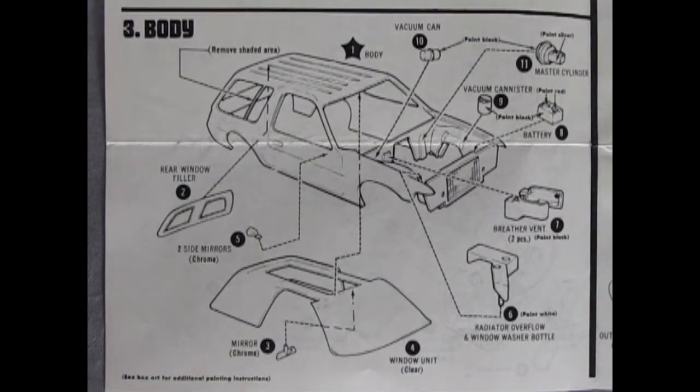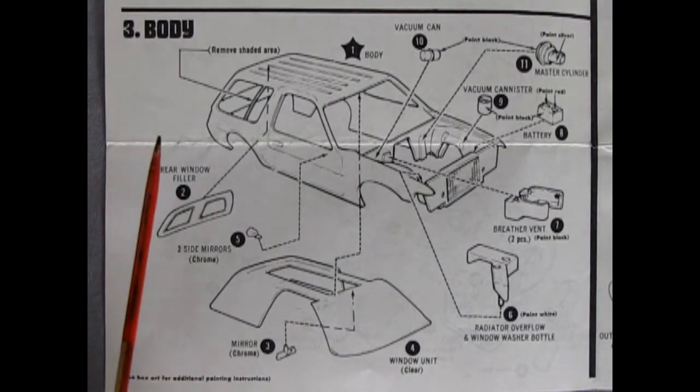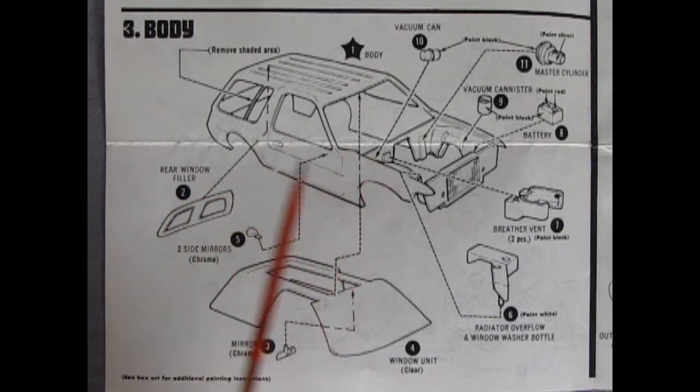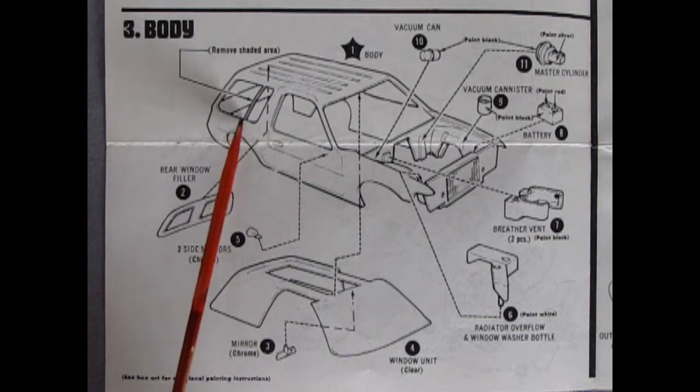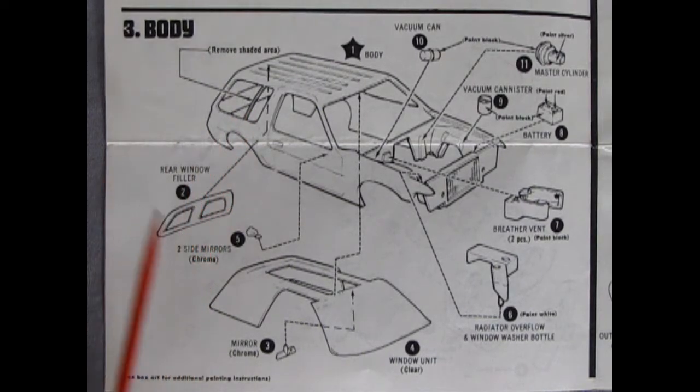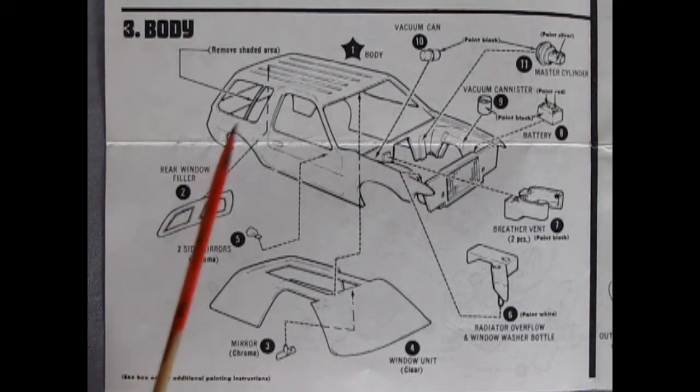Panel 3 shows our body assembly and there are quite a few things you need to do to alter the stock pacer to accept the custom pieces. One of them is to remove the brace in here for our window which of course is going to be replaced with a solid piece of plastic. And then here we've got our rear filler for the back window which makes it look like a panel van.